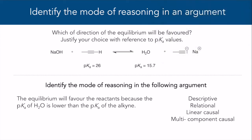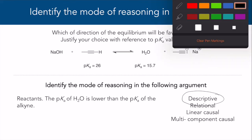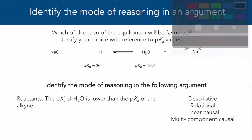Argument 3: Reactants. The pKa of H2O is lower than the pKa of the alkyne. This is a descriptive argument. The claim and evidence are being described, but there aren't any links that connect the two, such as words like because or so.